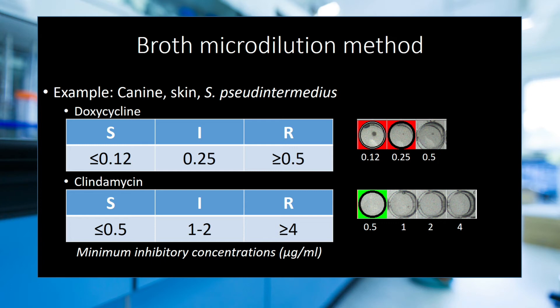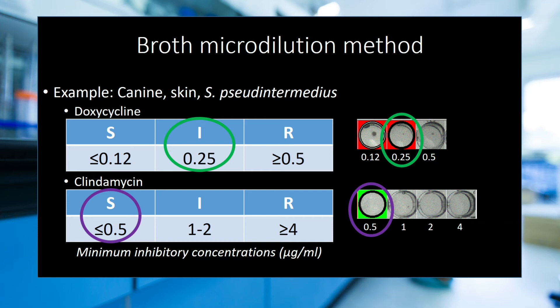You'll notice that a different concentration range is tested for each drug. The minimum inhibitory concentration, or MIC, for doxycycline is determined to be 0.25 micrograms per ml, which is interpreted as intermediate susceptibility. The MIC for clindamycin is less than or equal to 0.5 micrograms per ml. We can't determine the actual MIC without testing lower concentrations, but that is not necessary to reach an interpretation. The interpretation for clindamycin is susceptible. If 0.5 micrograms per ml are needed to inhibit growth in the lab and our expected serum concentration in the patient is 0.5 micrograms per ml, then we can predict that the organism will be susceptible to clindamycin in the patient.